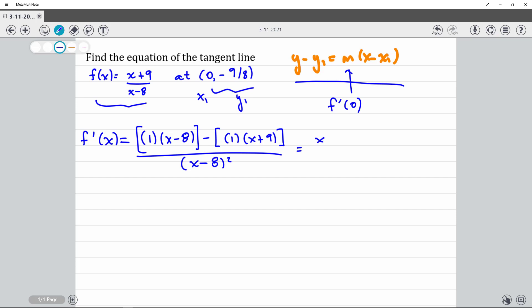So if I just distribute stuff out to see what I have left here, don't forget to distribute that negative sign, and then I get x minus 8 squared.